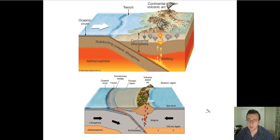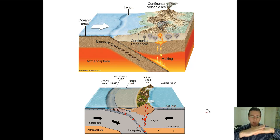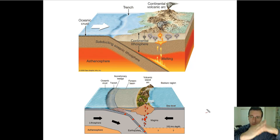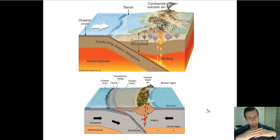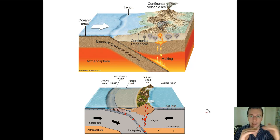All convergent boundaries will have some things in common. All of them will cause earthquakes. This happens because the two plates are sliding past each other, and there's going to be a lot of friction between the plates. Sometimes, because of that friction, the rocks will get caught against each other and they can't really move. These plates continue to move and subduct regardless of whether or not the rocks allow them to.